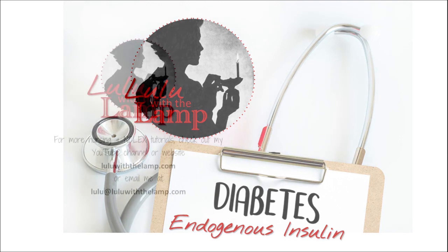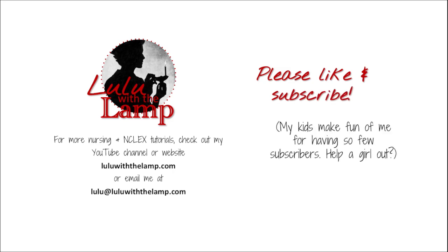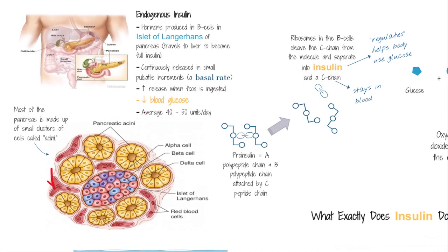So when we talk about diabetes, we're talking about how the body responds to increases in glucose in the blood. And we can't really talk about that without talking about endogenous insulin — in other words, insulin that the body makes on its own, as opposed to insulin that is created outside of the body and then used. It's really important to understand what insulin is, where it comes from, and what it does in the body. If you can get a handle on this, you will fly through the rest of this unit and won't have any problems understanding diabetes.